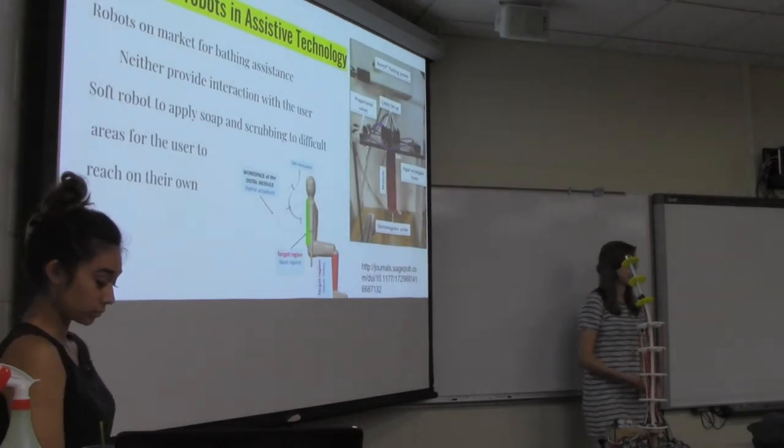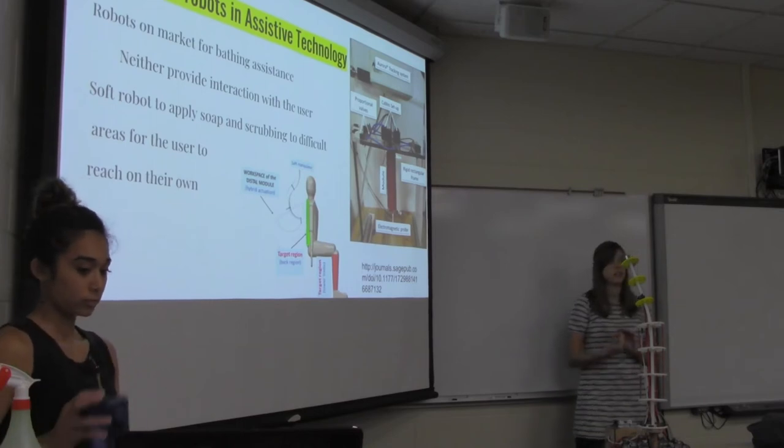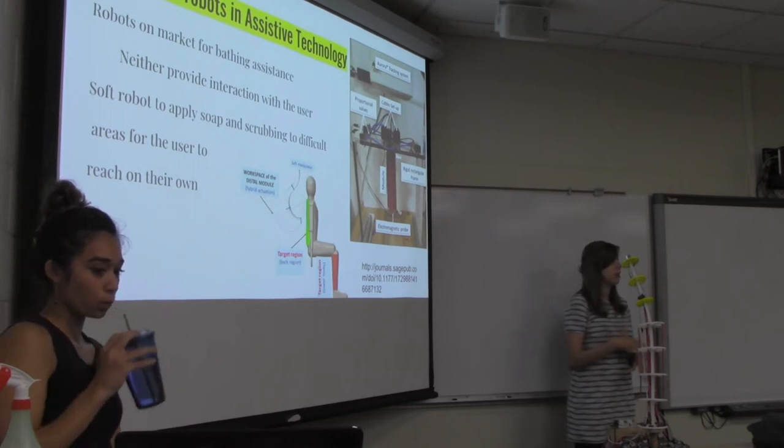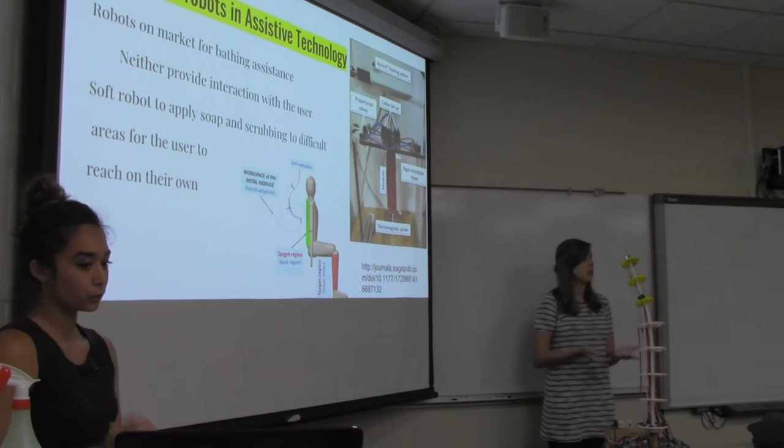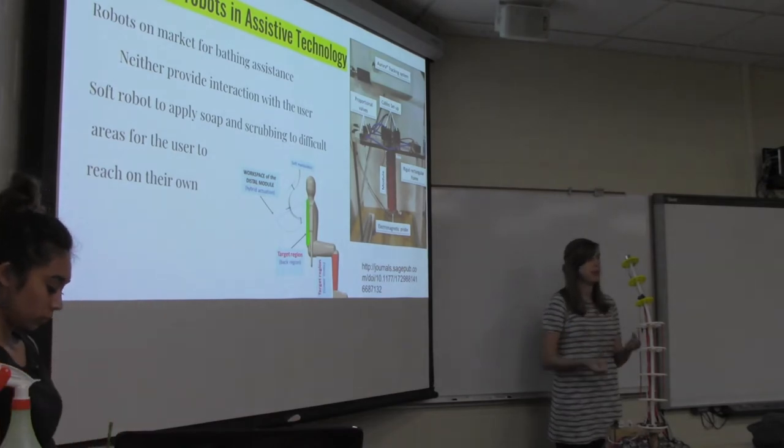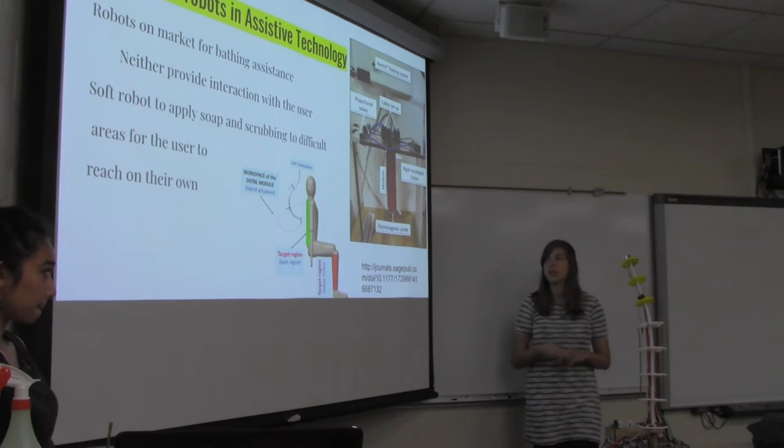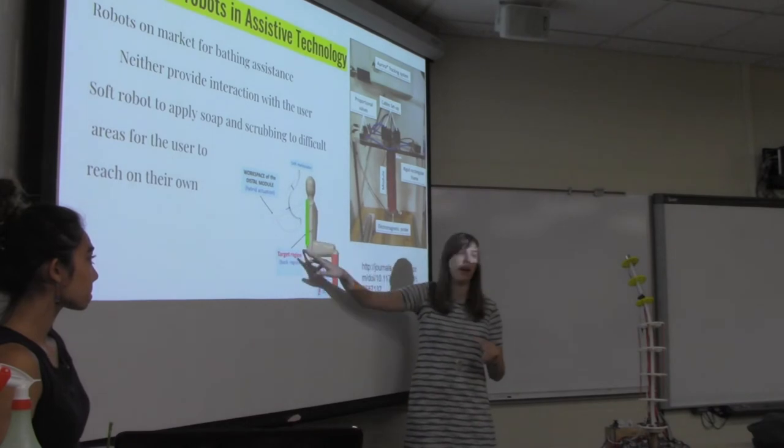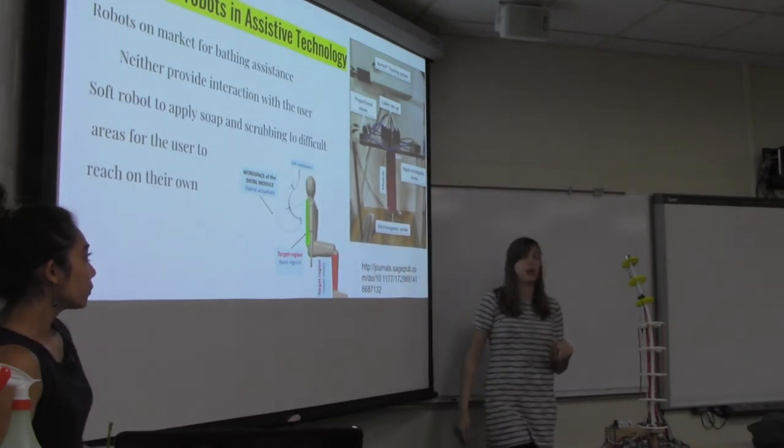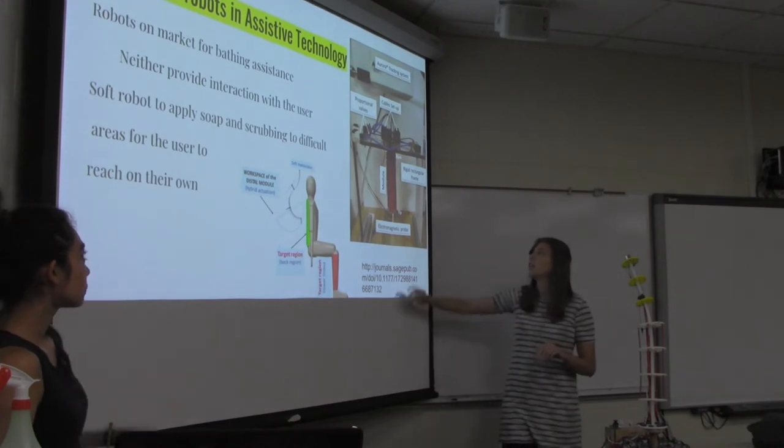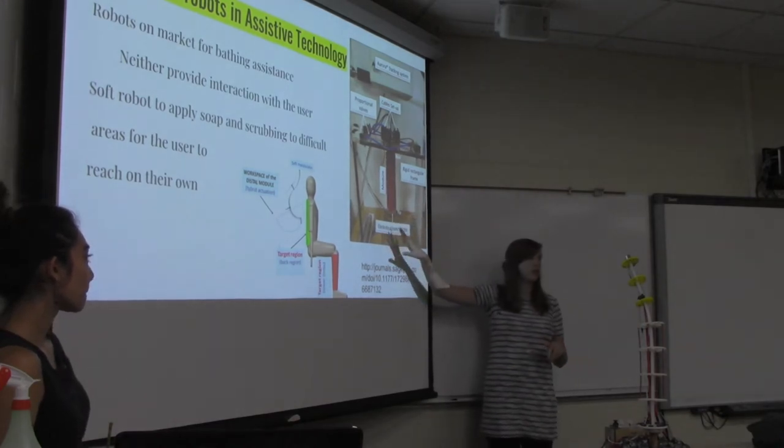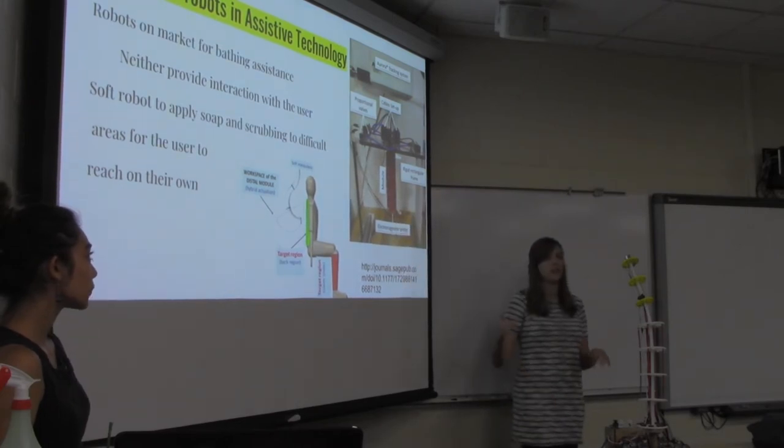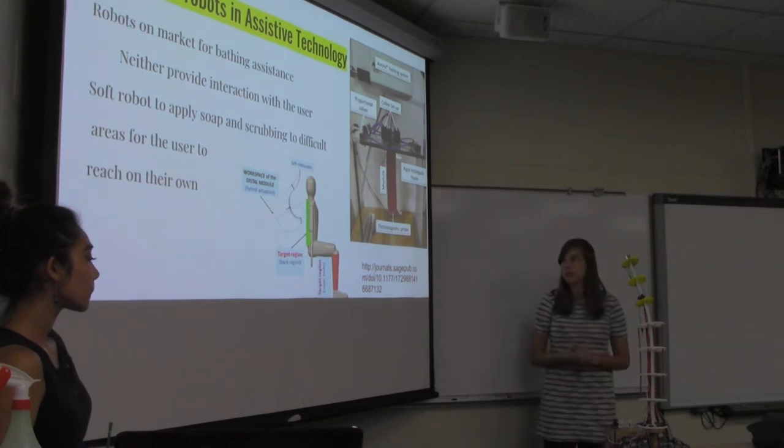So one research group looked at using a soft robot in a shower setting. They noticed that the shower robots that are currently on the market don't inherently interact with your user. One example is there's a chair that's a shower robot and parts of it will move away and it'll just spray water on you. So they wanted to design something that could interact more with their user. Their goal was to make a robot that could reach the back area and could apply soap and potentially scrub that area for their user.